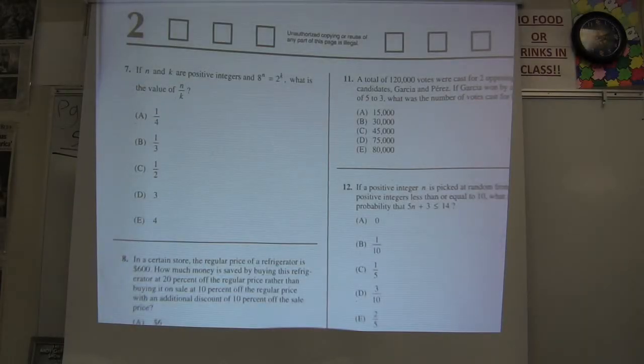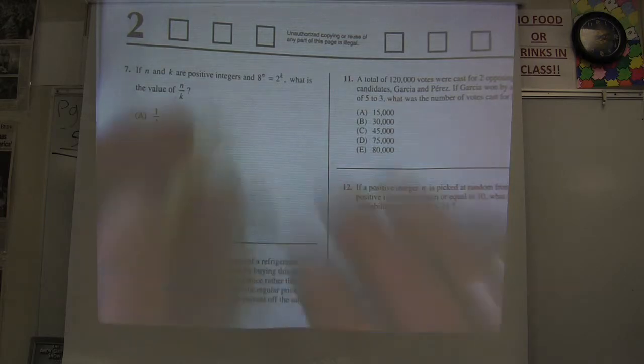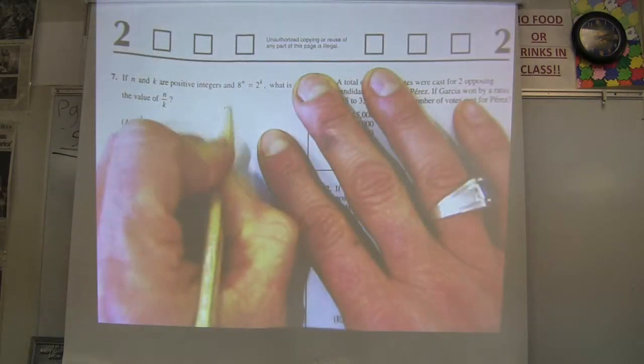Here's number 7. If n and k are positive integers and 8 to the n equals 2 to the k, what is the value of n over k? The challenging part on this one is you need to recognize that 8 is a power of 2. 8 is 2 to the third.